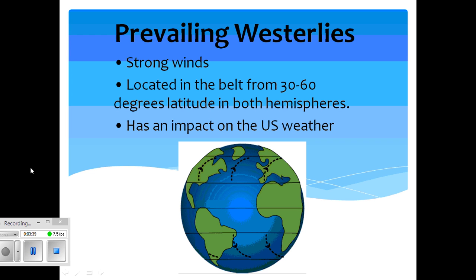Prevailing westerlies are strong winds and they can be found in the belt from 30 to 60 degrees latitude in both hemispheres. This has an impact on the United States weather conditions.